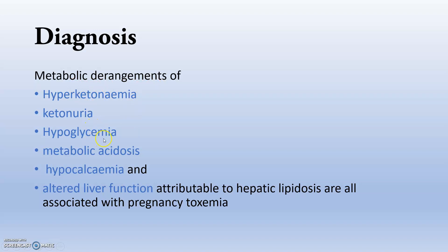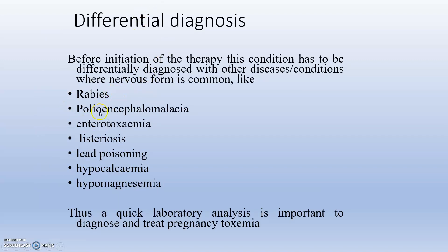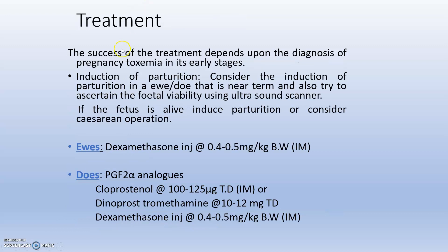Differential diagnosis includes rabies, polioencephalomalacia, enterotoxemia caused by Clostridium, and listeriosis — which causes microabscesses in the brain, lymphocytic leptomeningitis, ataxia, incoordination, and circling disease. Hypocalcemia and hypomagnesemia must also be ruled out. All differential diagnoses must be eliminated before confirming pregnancy toxemia. Treatment includes induction of parturition among other protocols.